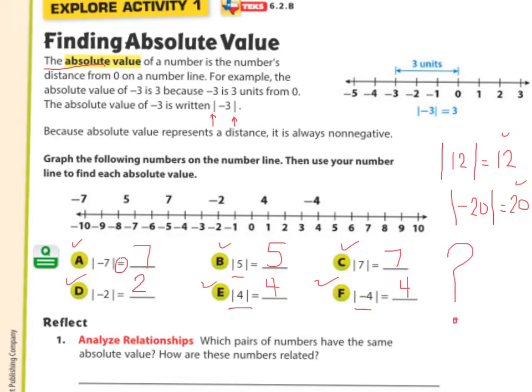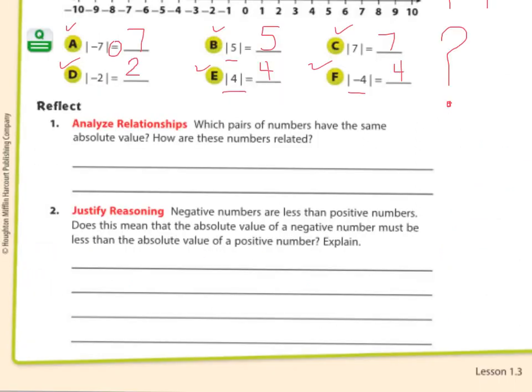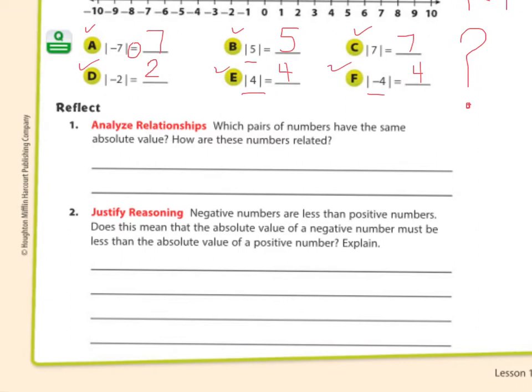If you don't have a question because it seems easy, write a question you already know the answer to, or one a teacher would ask a student. Here's a really good question: negative numbers are less than positive numbers. Does this mean that the absolute value of a negative number must be less than the absolute value of a positive number? Explain.